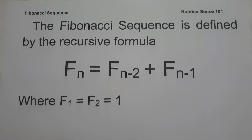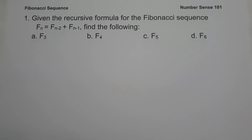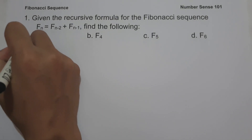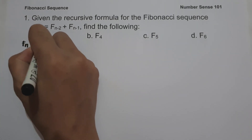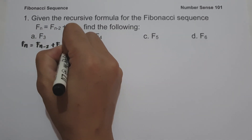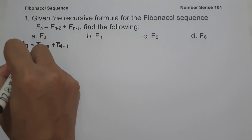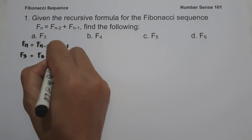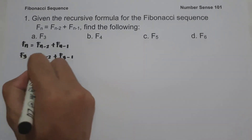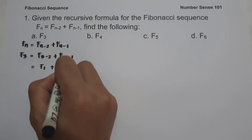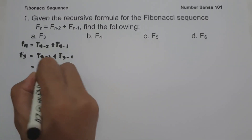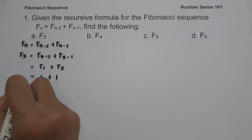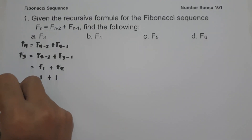Let's start with an example. On letter A, we are going to find the value of f(3). Using the recursive formula f(n) = f(n-2) + f(n-1), we get f(3) = f(1) + f(2). Since f(1) = 1 and f(2) = 1, the value of f(3) is 1 plus 1, which is 2.